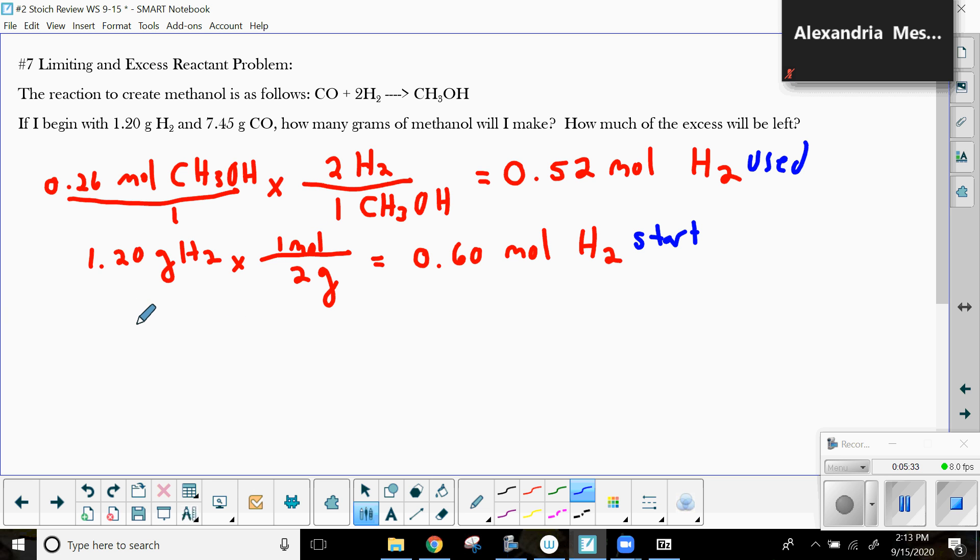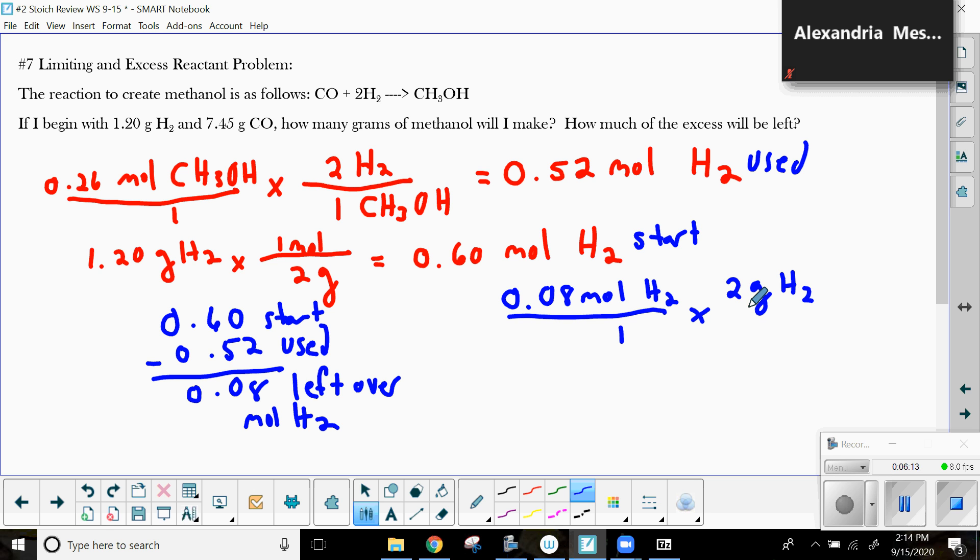And so, I'm going to figure out what was left over. So, 0.60 start minus 0.52 used equals 0.08 left over. I am not doing a good job with sig figs on this. I just want to show you the concept. So, that's how many moles of H2 that are left over. So, I take that, moles of H2, times that by 2 grams of hydrogen in every 1 mole. And I get 0.16 grams of hydrogen gas.